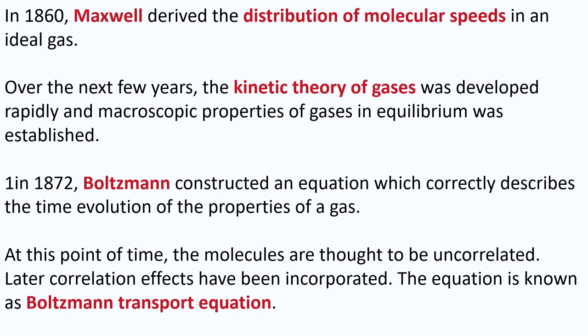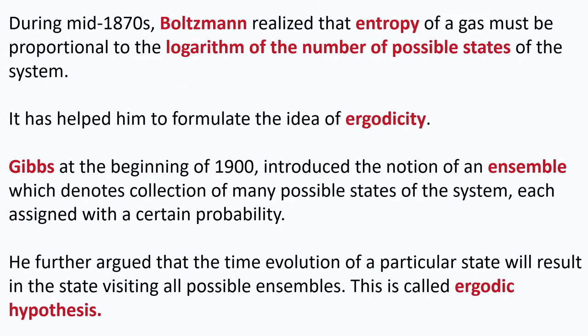Around the same time, molecules were thought to be uncorrelated — meaning there is no intermolecular attraction and they move independently of each other. Later, these correlation effects were incorporated, and this equation is known as the Boltzmann transport equation, incorporated through the relaxation time approximation. During the mid-1870s, Boltzmann realized that the entropy of a gas must be proportional to the logarithm of the number of possible states of the system — that is, S ∝ log(W).